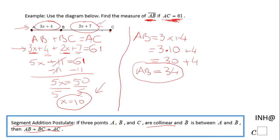You can do a similar approach to find BC: 2 times 10 plus 7 equals 27. And 27 plus 34 equals 61, which checks out. If you enjoyed this video, don't forget to click the like button and come back to C Squared for more help. Thank you!